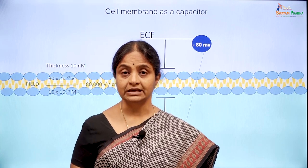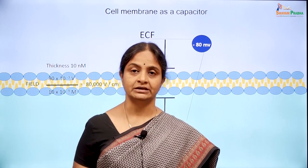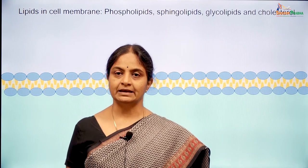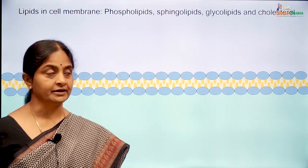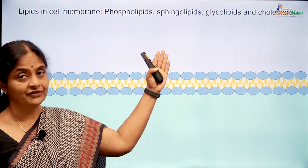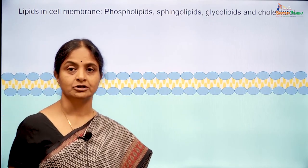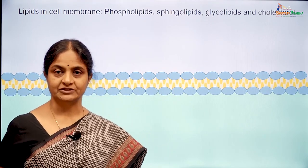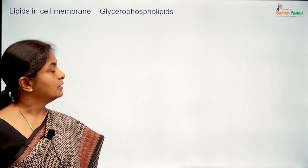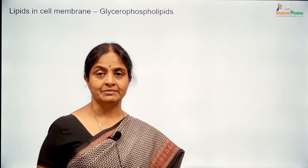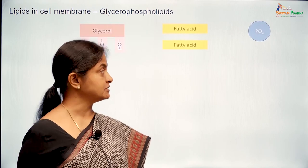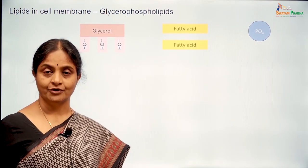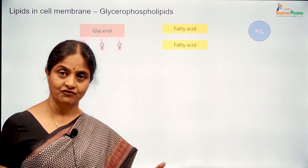It is these lipids that we are going to learn about. The lipids of the cell membrane can be classified into phospholipids, sphingolipids, glycolipids and cholesterol. We will look at the phospholipids first. It is better to refer to them as glycerophospholipids because they have a glycerol backbone and they have to be differentiated from the sphingophospholipids.